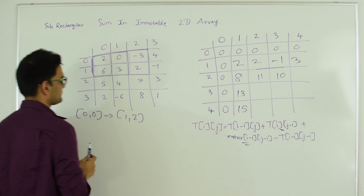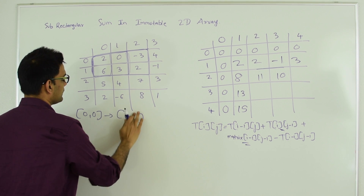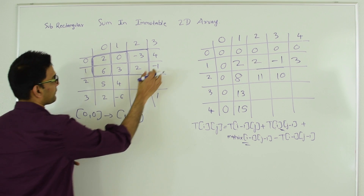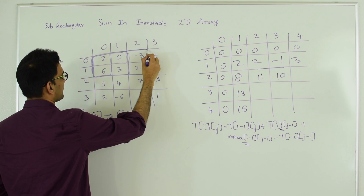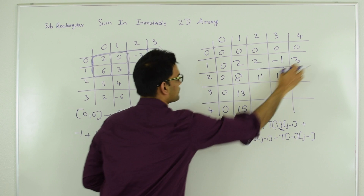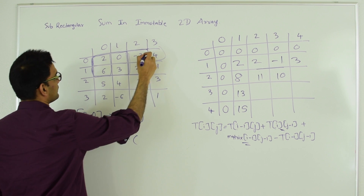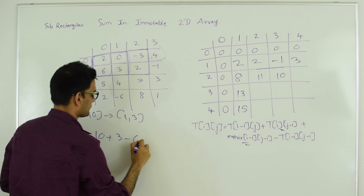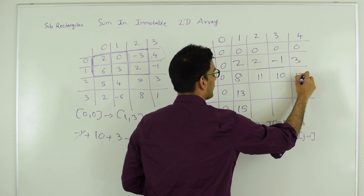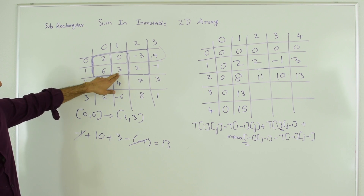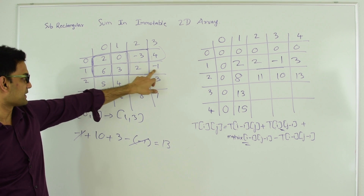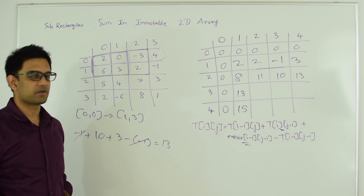Now let's fill T[2,4]. We're looking for the sum starting from 0,0 to 1,3. Using the formula: start with matrix[i-1,j-1] = -1, plus the left value T[2,3] = 10, plus the top value T[1,4] = 3, minus the common section T[1,3] = -1. The -1 values cancel each other, so this value becomes 13. Verification: 2+6=8, 8+3=11, 11+4=15, 8+3=11, 11+2=13, 13+4=17, 17+(-1)=16, 16-3=13. Confirmed.